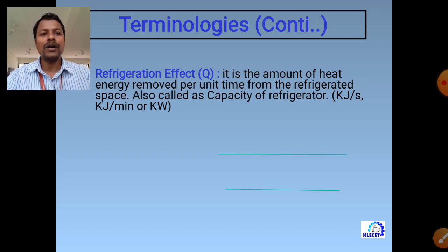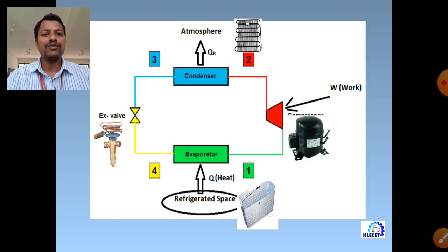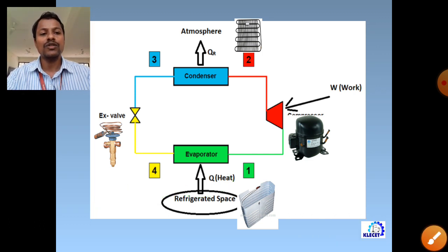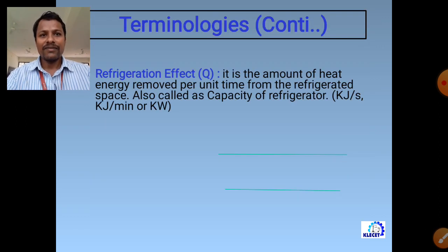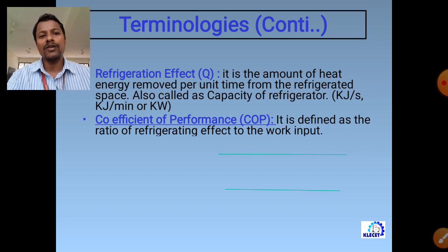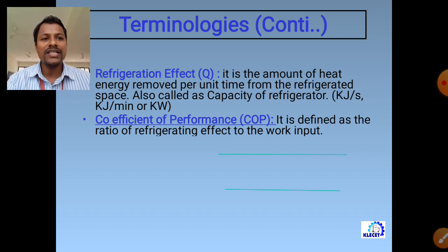To decrease the temperature of any space or substance, we must remove heat energy. The refrigerator maintains the cold space temperature well below the atmospheric. If atmospheric temperature is 25°C and we want to maintain the cold space at 20°C, heat must be removed from that space. The heat absorbed from the cold space must then be rejected into the atmosphere.